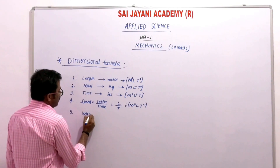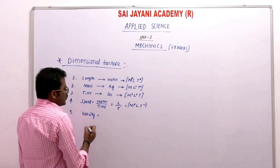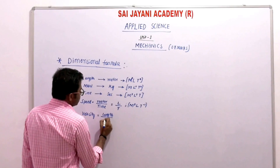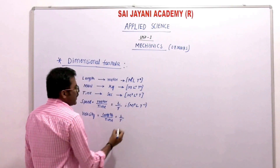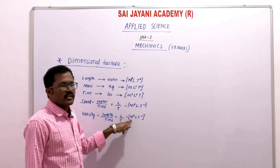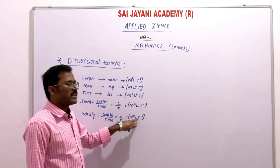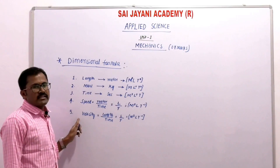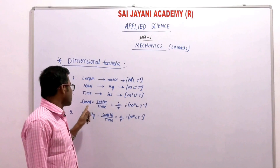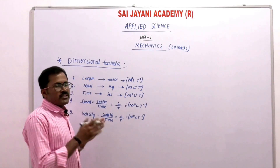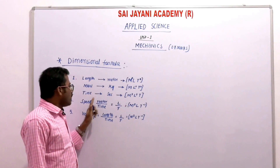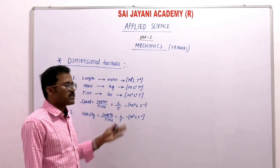Velocity is defined as the ratio of displacement by time. Displacement is a length, so it is represented by L, divided by time T. Again M⁰ L T⁻¹ is the dimensional formula for velocity. The difference between speed and velocity: speed is distance divided by time, velocity is displacement divided by time. Both involve length and time, so the SI unit and dimensional formula are the same.